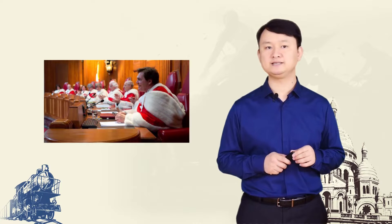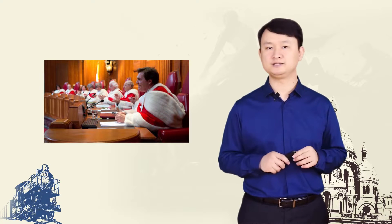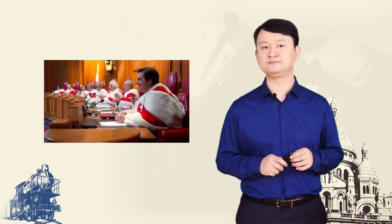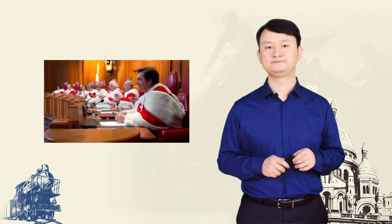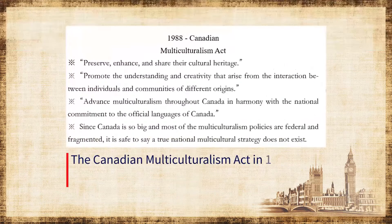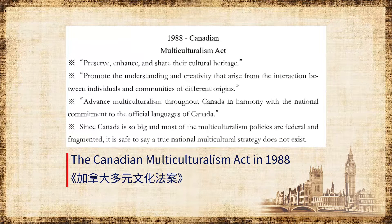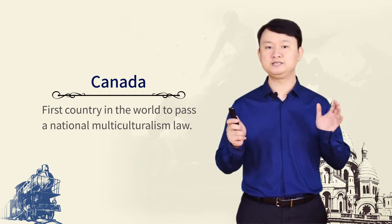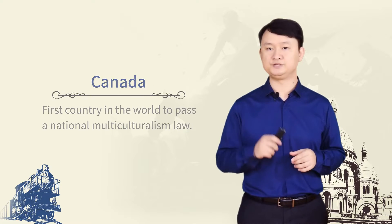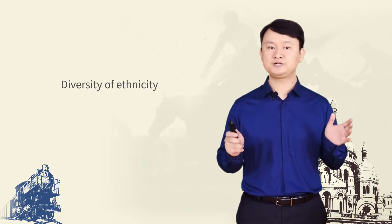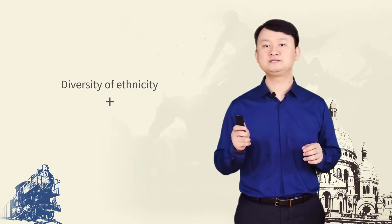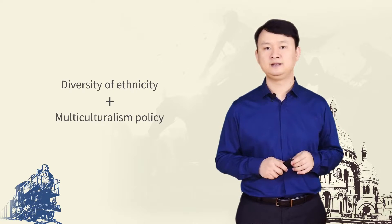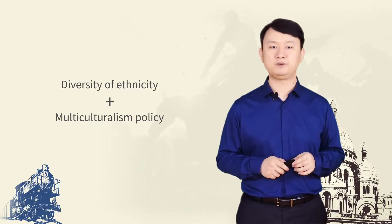In 1971, the Government of Canada implemented a multicultural policy to recognise that pluralism was a fact of Canadian life. In 1988, the Canadian Multiculturalism Act was passed. Canada became the first country in the world to pass a national multiculturalism law. As a result, the diversity of ethnicity, coupled with the government's multiculturalism policy, led to the emergence of multicultural Canada.